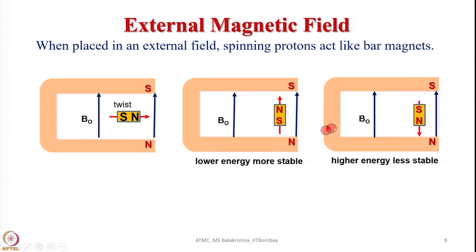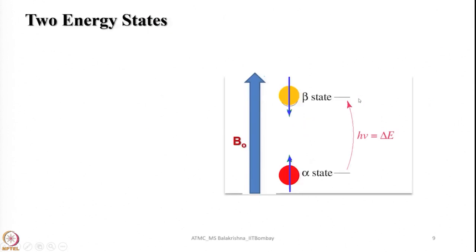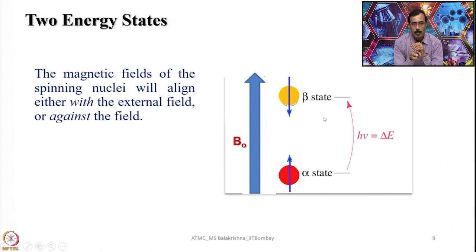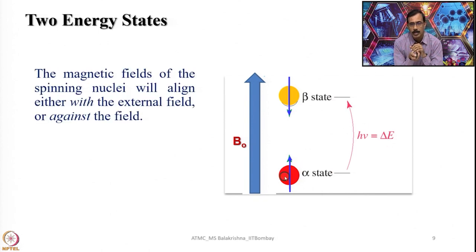You can convert from the lower energy state to the higher energy state by supplying energy equivalent to the energy gap between these two levels. The alpha state has nuclei aligned with the field, the beta state (higher energy) has nuclei aligned opposite to the applied field, and the energy difference is given by hν = ΔE. The magnetic field of the spinning nuclei will align either with the external field or against it.